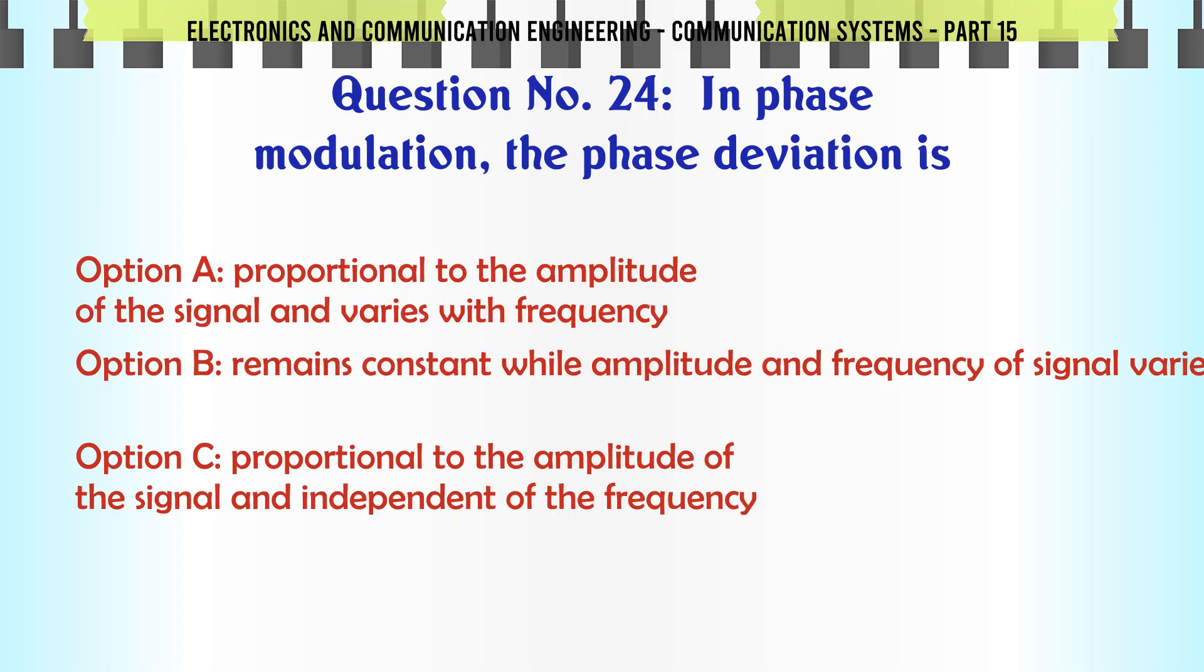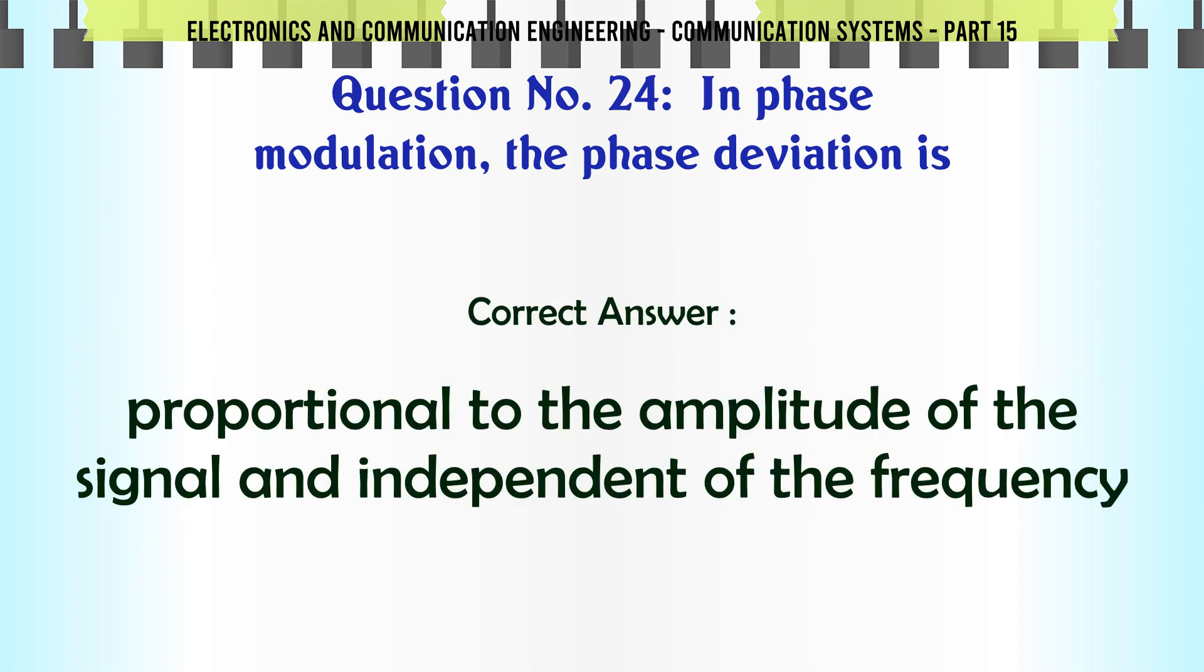In phase modulation the phase deviation is: A proportional to the amplitude of the signal and varies with frequency, B remains constant while amplitude and frequency of signal varies, C proportional to the amplitude of the signal and independent of the frequency, D none of the above. The correct answer is proportional to the amplitude of the signal and independent of the frequency.